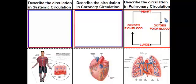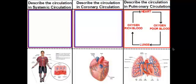Your heart is going to pump oxygen-poor blood to the lungs, and then your lungs are going to deliver oxygen to the blood, and then that oxygen-rich blood will then get sent back to the heart. That's how your pulmonary circulation pathway works. Now let's take a closer look as to how it actually works with the flow of blood through the heart and the lungs.